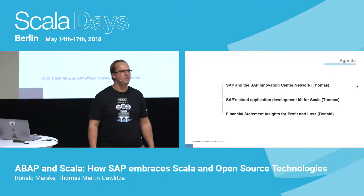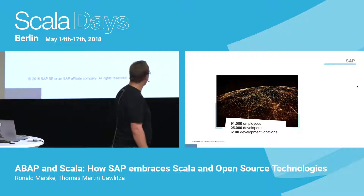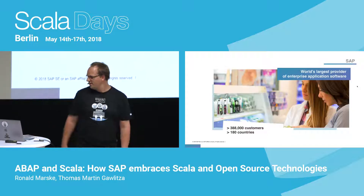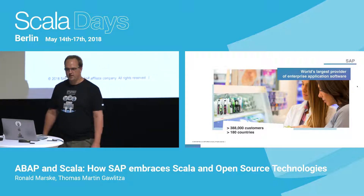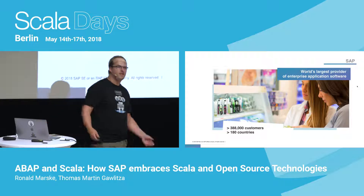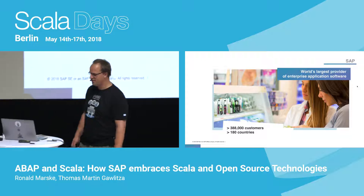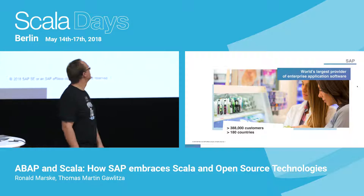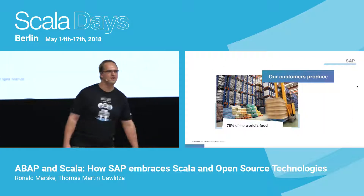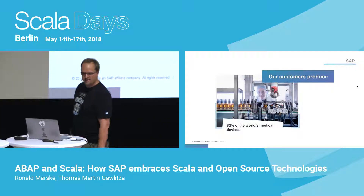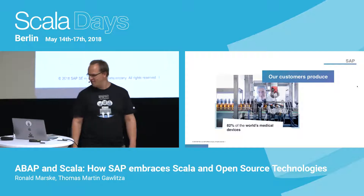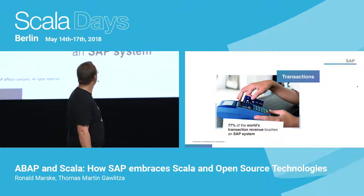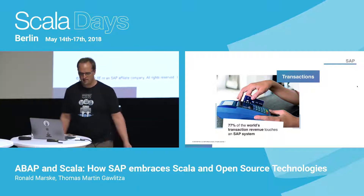A few quick facts about SAP: it's a huge company — 91,000 employees, 25,000 developers, more than 100 development locations. We are actually the world's largest provider of enterprise application software. We have 388,000 customers and operate in more than 180 countries. Our customers produce 78% of all food, 82% of all medical devices, and 77% of all revenue transactions at some point touch an SAP system.